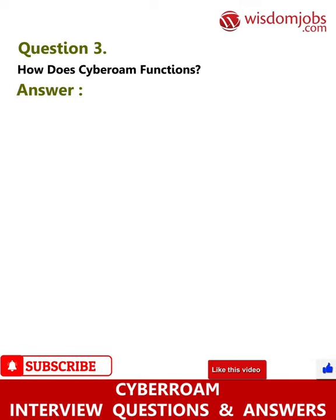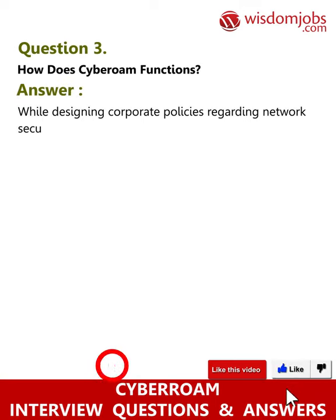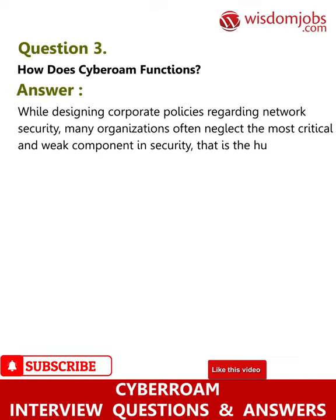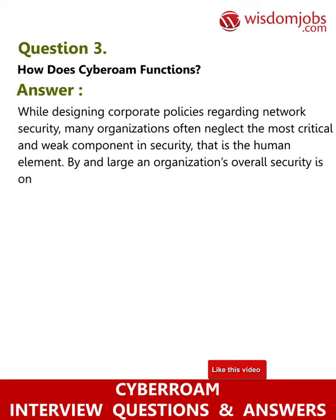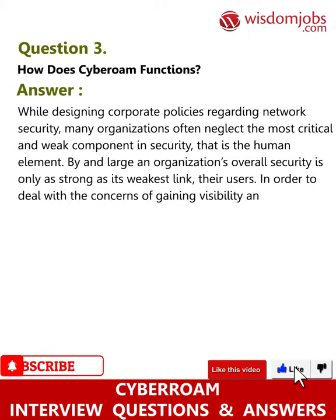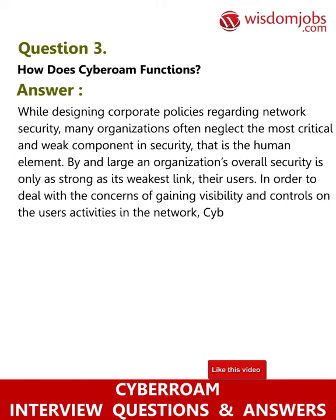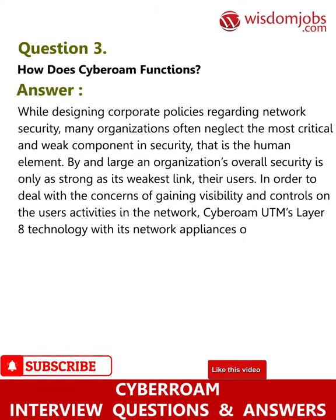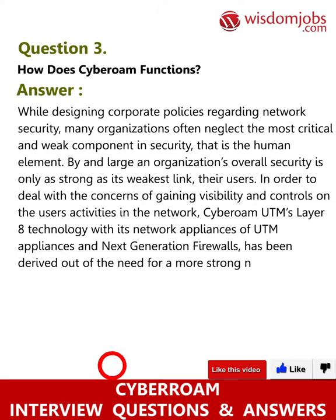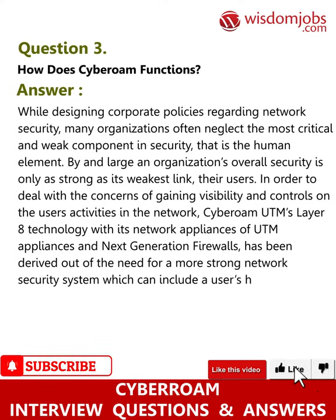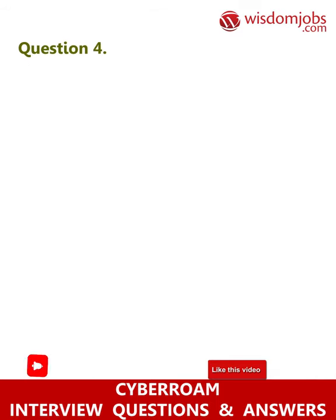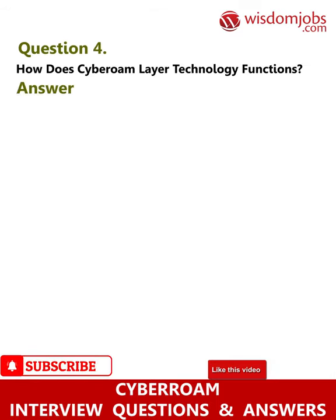Question 3: How does Cyberome function? Answer: While designing corporate policies regarding network security, many organizations often neglect the most critical and weak component in security — that is, the human element. An organization's overall security is only as strong as its weakest link: its users. To deal with the concerns of gaining visibility and controls on user activities in the network, Cyberome's UTM Layer 8 technology with its UTM appliances and next-generation firewalls has been derived out of the need for a stronger network security system which can include a user's human identity as part of the firewall rule-matching criteria.